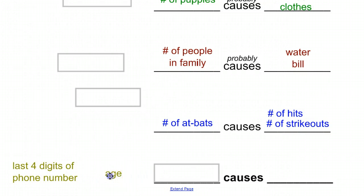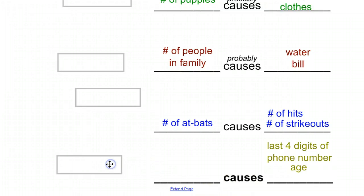And then this last one, last four digits of your phone number and your age. Does being older cause the last four digits of your phone number to be a certain pattern, or do the last four digits of your phone number cause your age? Neither of those make sense. But what could really cause both? Well, nothing really. When you get certain things that don't make any sense together that aren't even correlated, it doesn't even make sense to talk about what causes what. There has to at least be a relationship, a link, first. And that's when you have to decide, does one of them cause the other, or is there something behind the scenes causing both?